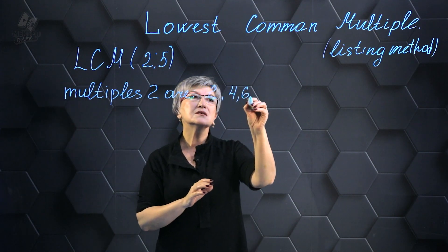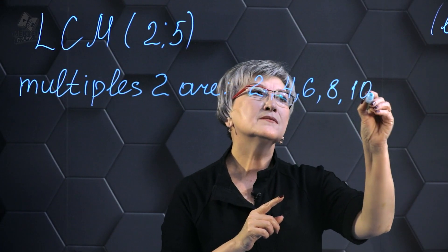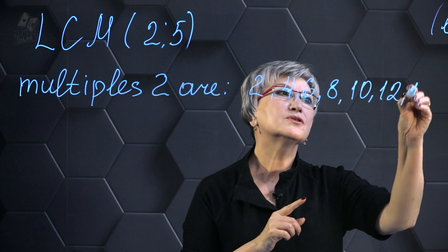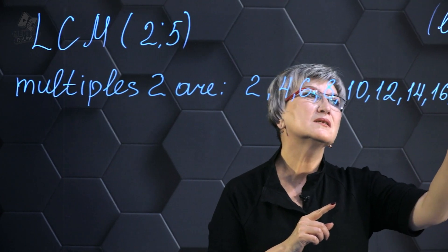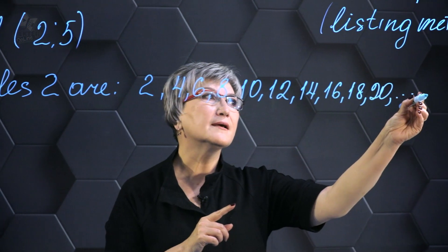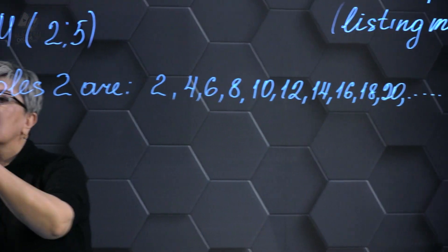Following that, the subsequent numbers in the sequence are 6, 8, 10, 12, 14, 16, 18, 20, and so on, continuing in an uninterrupted pattern.